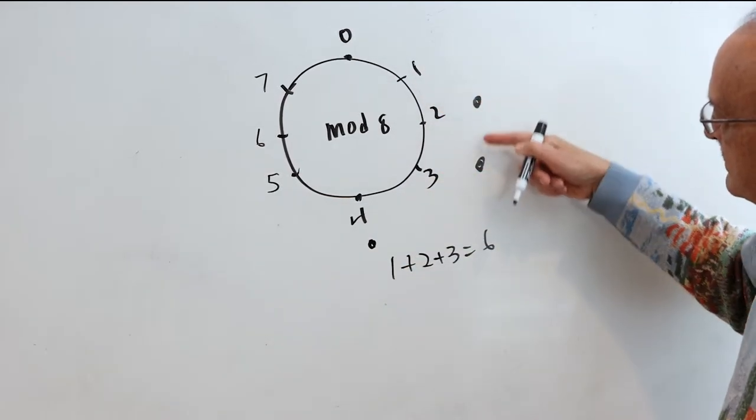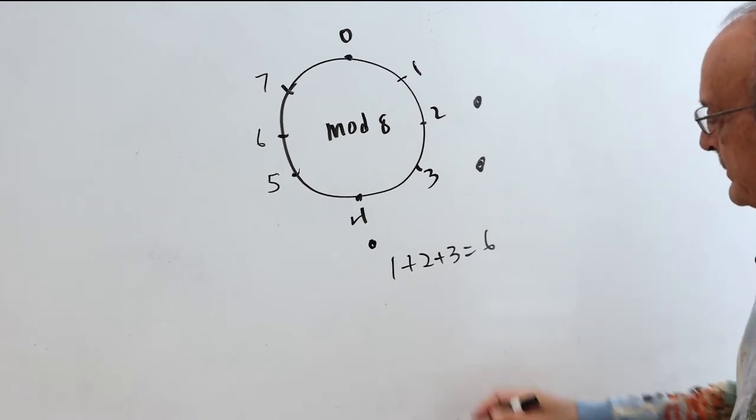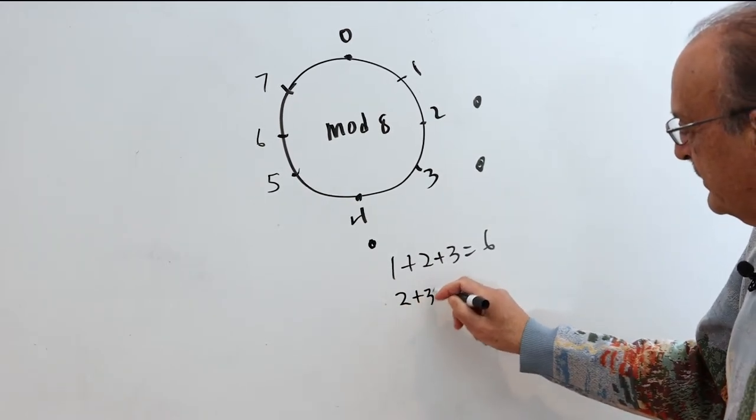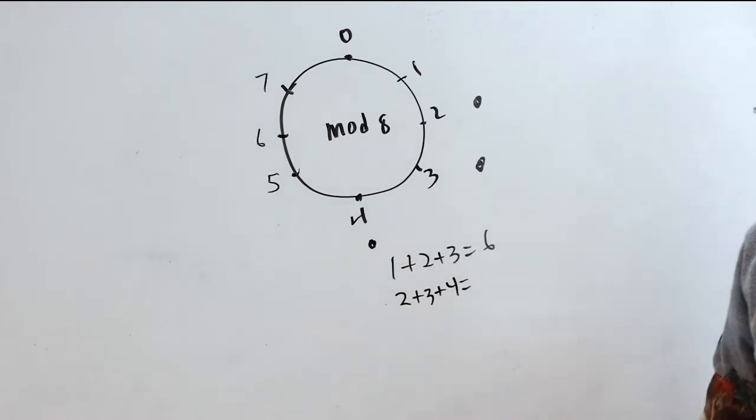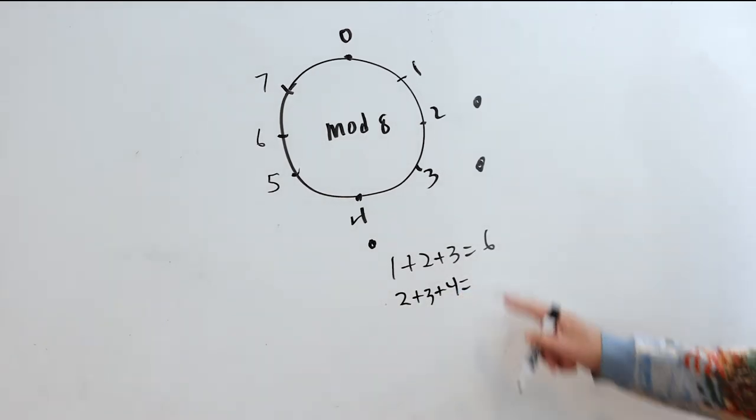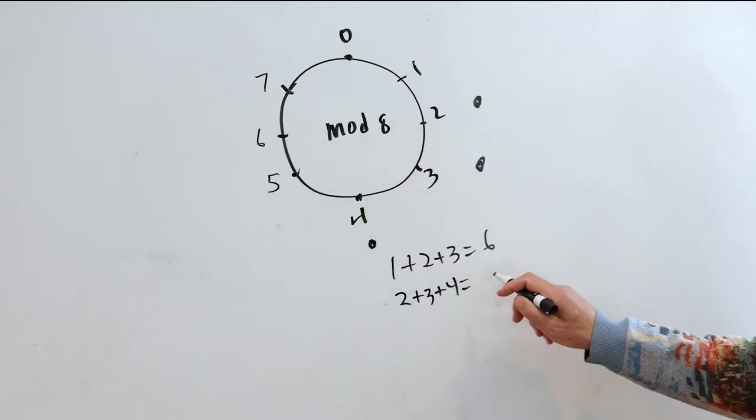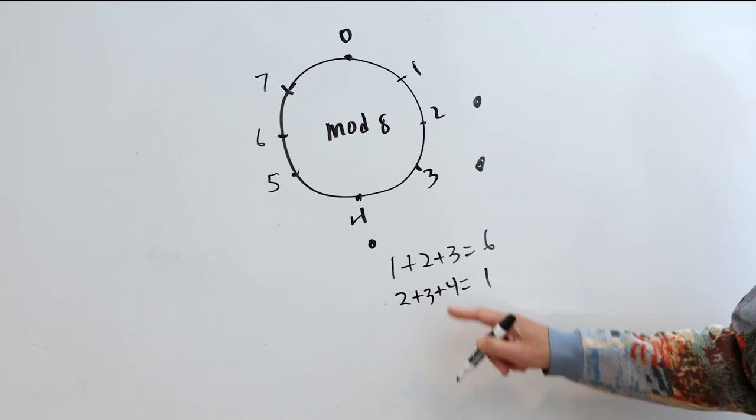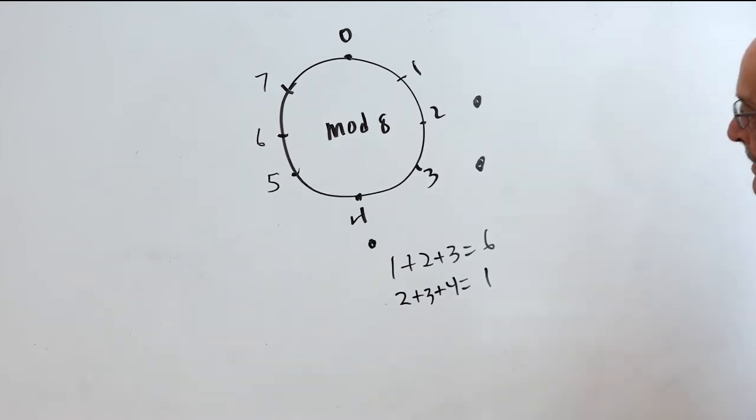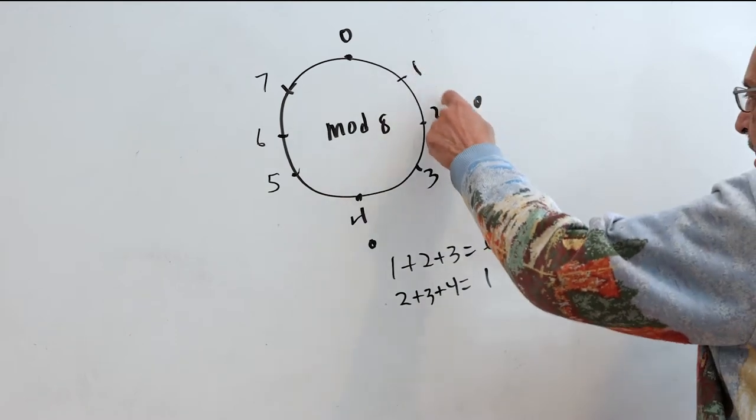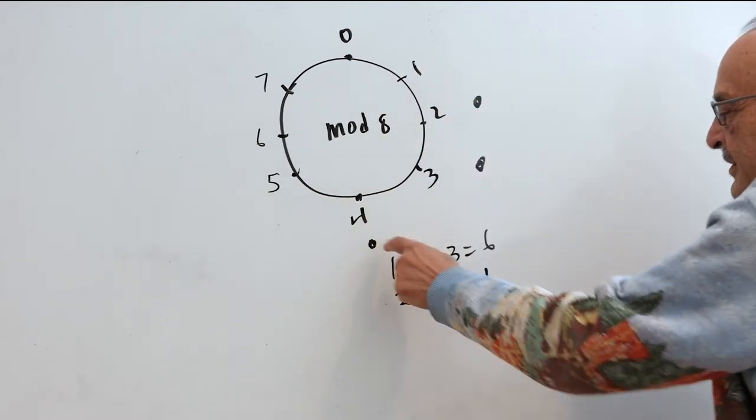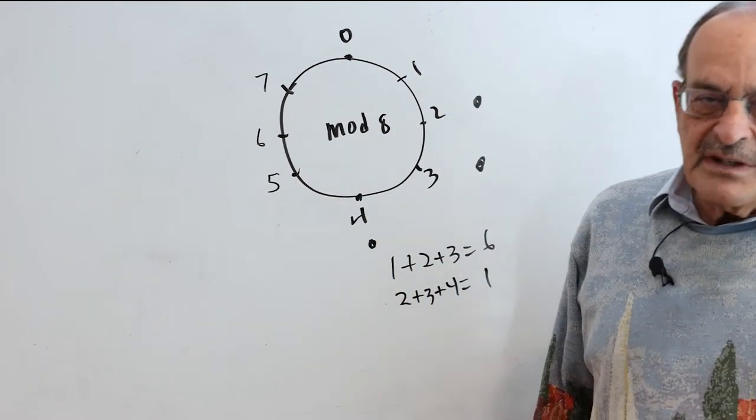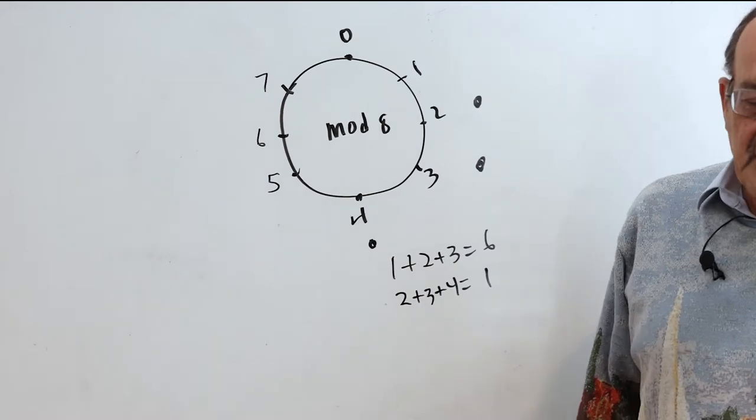Now imagine we dial this thing so that these 3 selected dots move clockwise one space. So 1, 2, 3 becomes 2, 3, 4. Now I don't actually need to add these numbers. I can just make this 3 bigger. So 3 plus 6 is 9, take away 8 is 1. Basically all I did was if 1 became 2, and 2 became 3, and 3 became 4, then they each became 1 bigger. So the sum became 3 bigger.